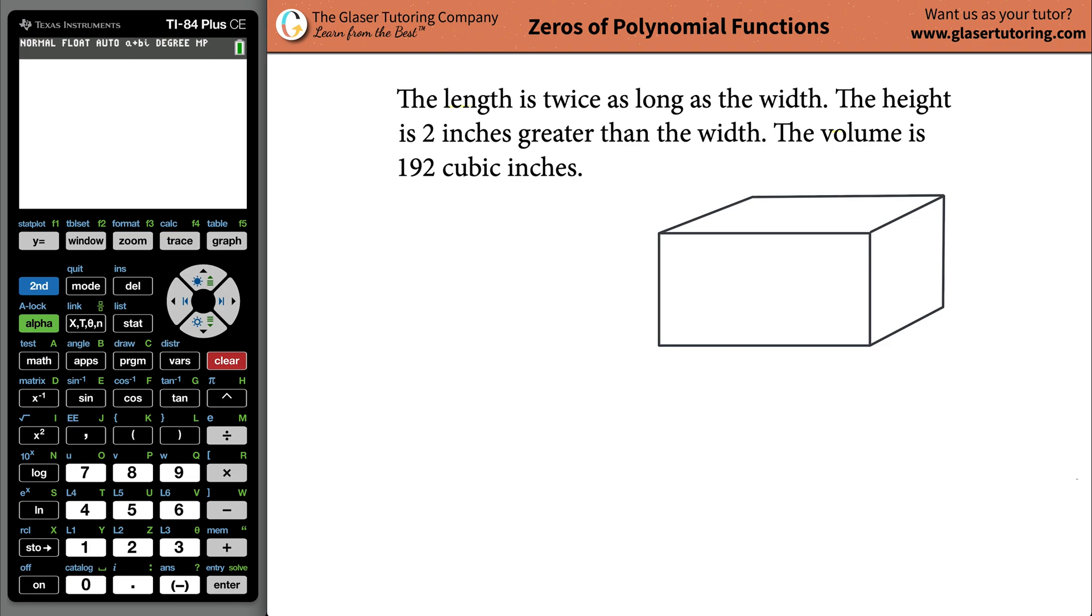Hello, Andrew here from the Glazer Tutoring Company. Today I would like to teach you how to find the dimensions of a box. Here's the following problem: The length is twice as long as the width. The height is two inches greater than the width. The volume is 192 cubic inches.